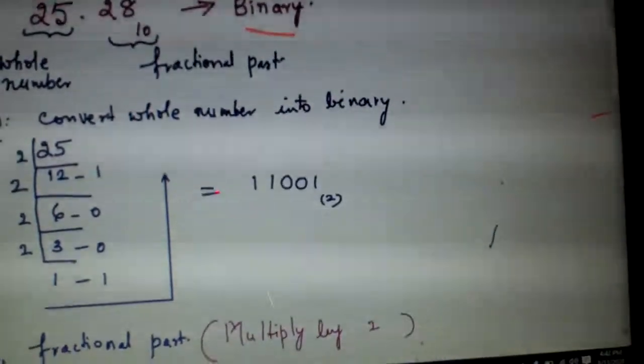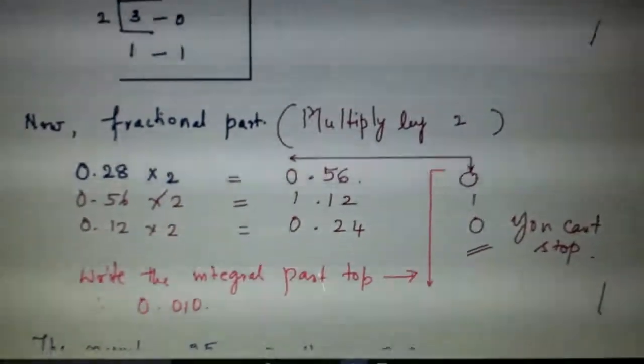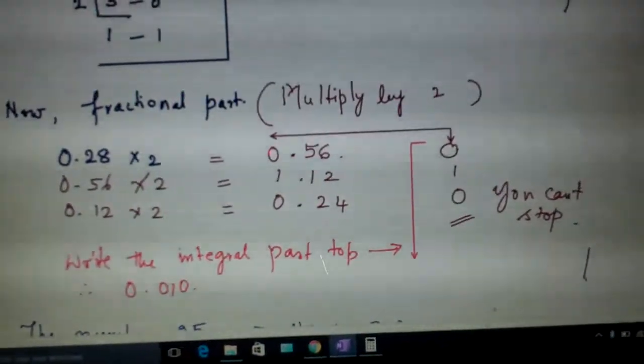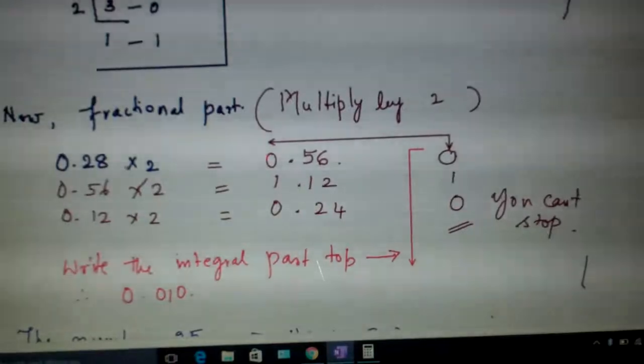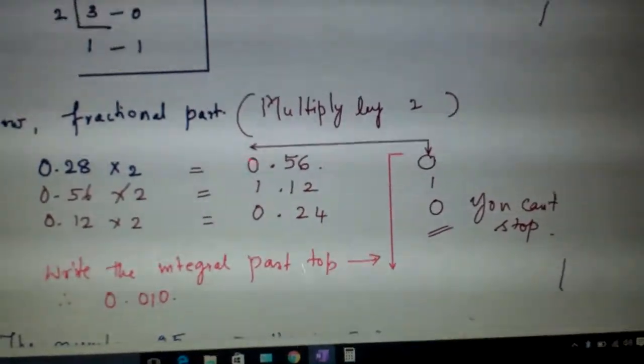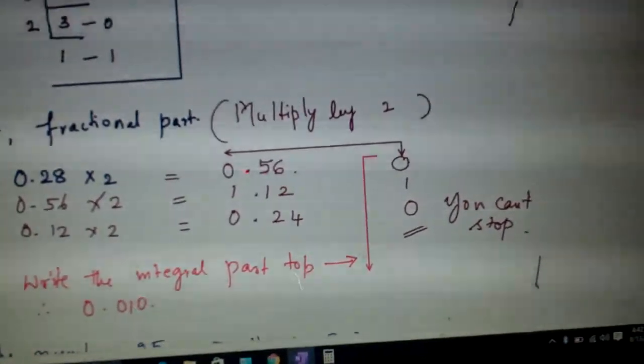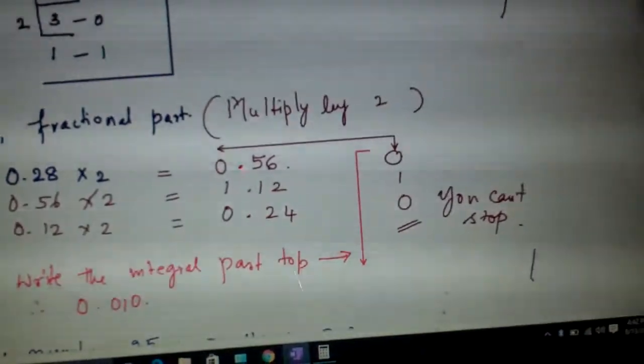Now, how do you convert the fractional part? What is the fractional part given to you? 0.28. To do this, you multiply it by 2. 0.28 times 2 is 0.56. This is the fractional part, this is the integral part here. So that will be written here.